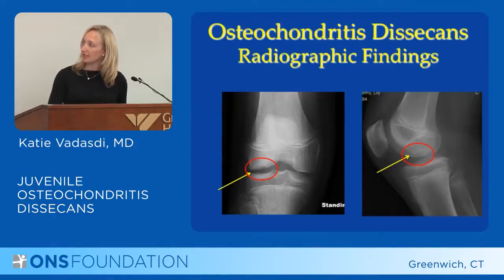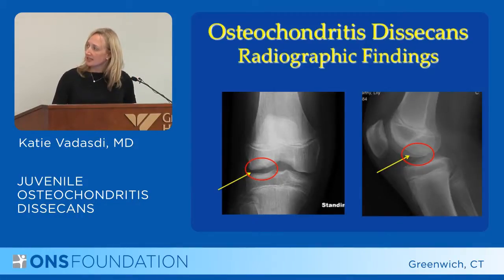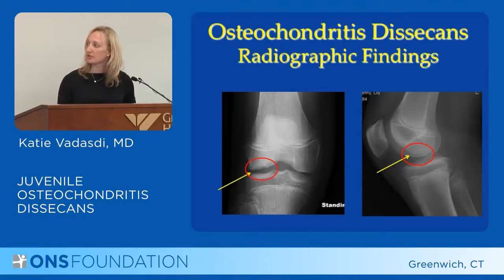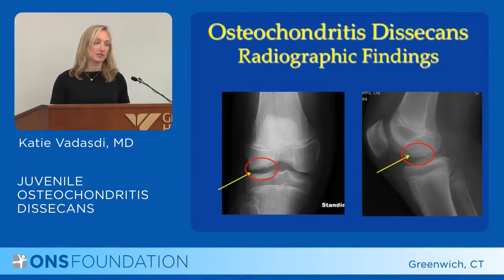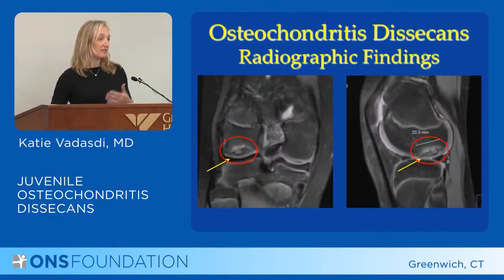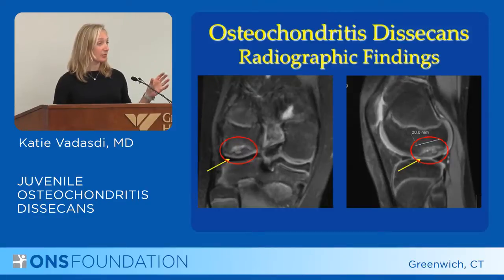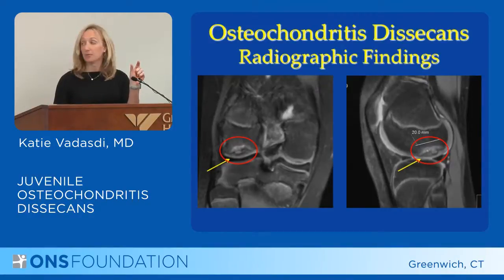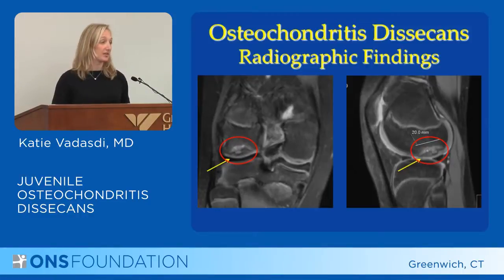Here's an x-ray looking at the knee from the front on the left-hand side and then from the side. What you can see at the end of the bone is that it's not a completely flat or normal surface — you see an irregularity right inside that red circle. You can see the same thing where that yellow arrow inside the red circle is looking from the side. When you see this in a patient, it's a little concerning, so the next step is often to get an MRI to better understand the extent.